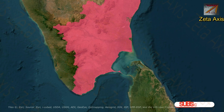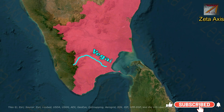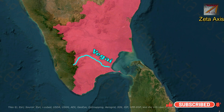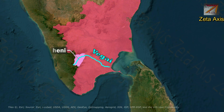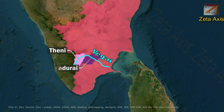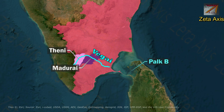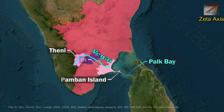The next important river is the Vagai river. The Vagai river originates from the Western Ghats on the Tamil Nadu-Kerala border. The Vagai river passes through Madurai district and flows into Palk Bay very close to Pamban bridge in Ramanathapuram district of Tamil Nadu.